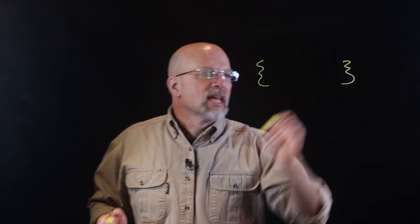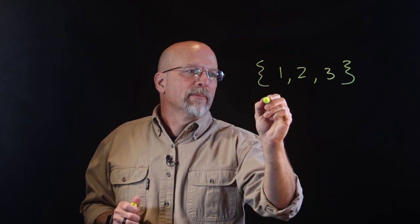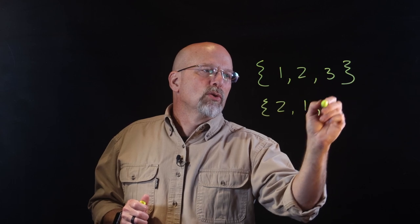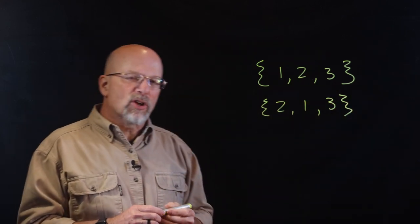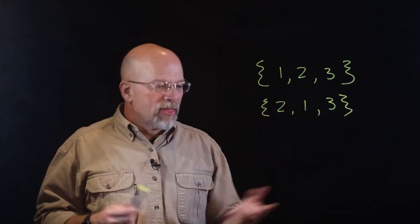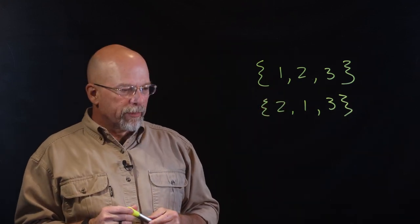Let's write a set. One of the things we do when talking about a set is list the elements inside curly braces. So the set {1, 2, 3} is actually the same thing as {2, 1, 3}. Those two sets are exactly the same — they contain the same elements; there is no order to it.